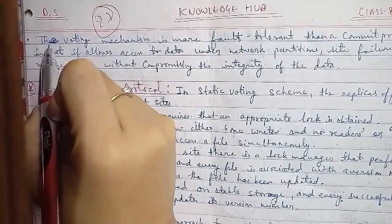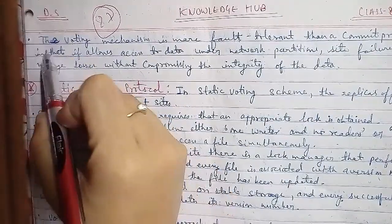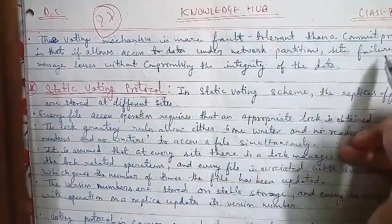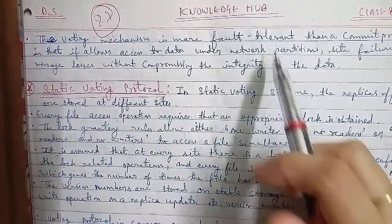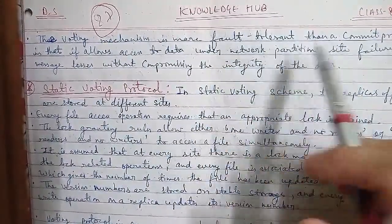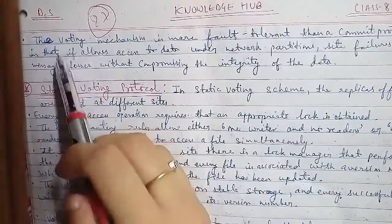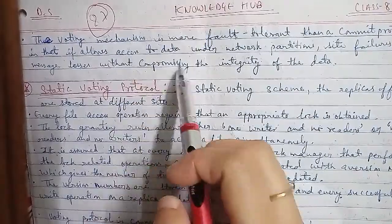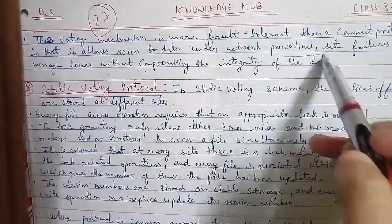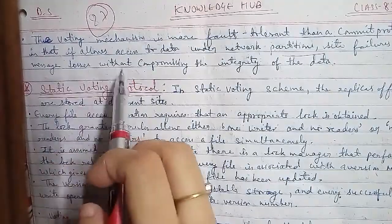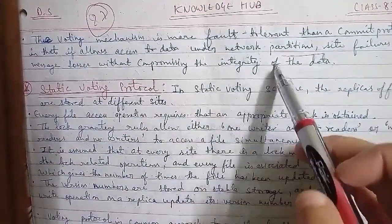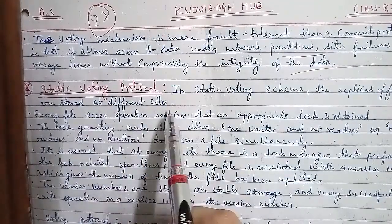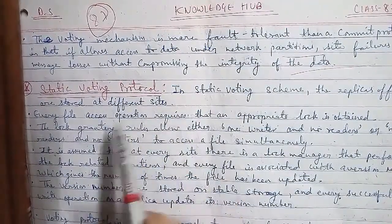The voting mechanism is more fault tolerant than a commit protocol. It allows access to data under network partition, site failures, and message losses without compromising the integrity of the data. Now we start with the static voting protocol.